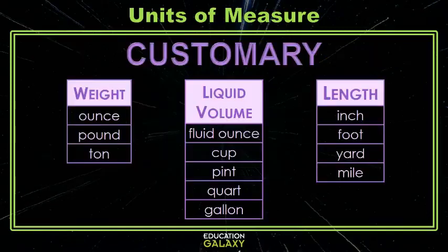We have two primary systems of measure. One is customary, and here we have the different units of measure for weight, liquid volume, and length. It's good to remember which ones are the smaller ones and which ones are the bigger ones — that's going to help you know whether you should multiply or divide when it's time to convert. So let's practice one of those.